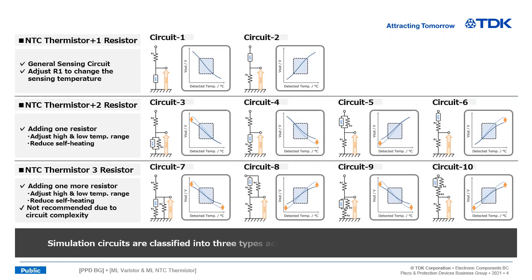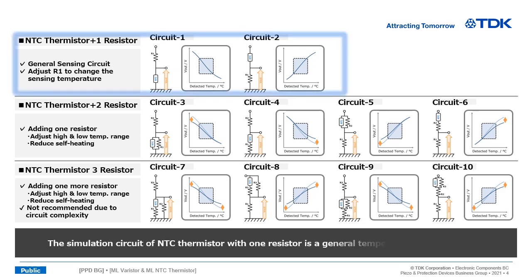Simulation circuits are classified into three types according to number of resistors. The simulation circuit of NTC thermistor with one resistor is a general temperature sensing circuit. You can adjust R1 to change the sensing temperature.